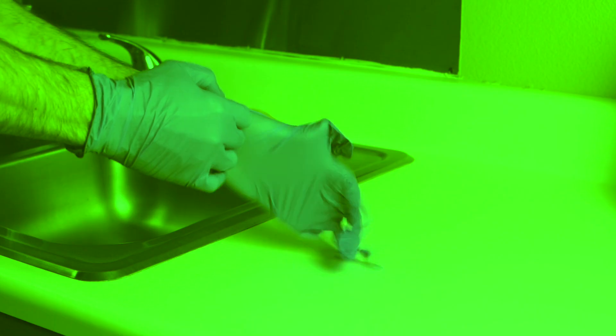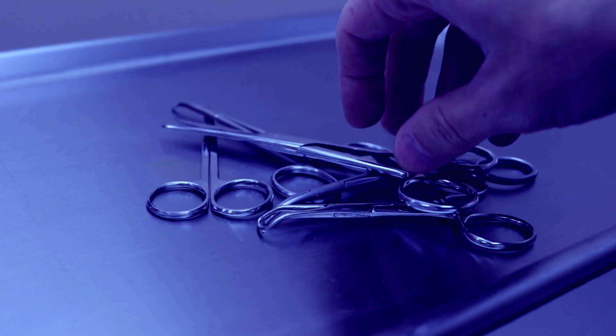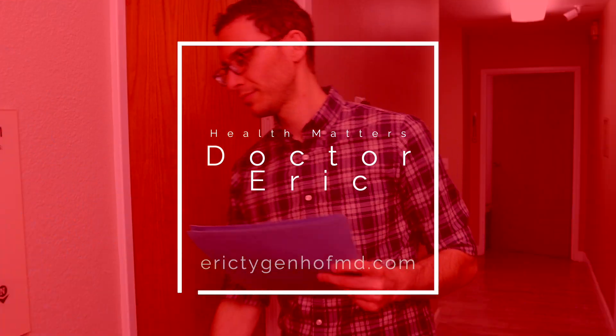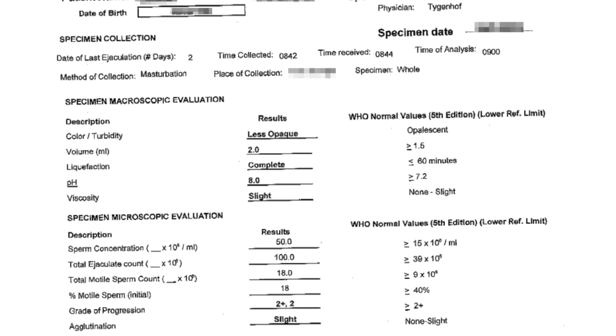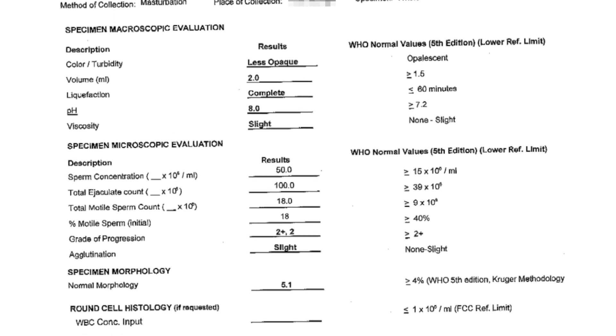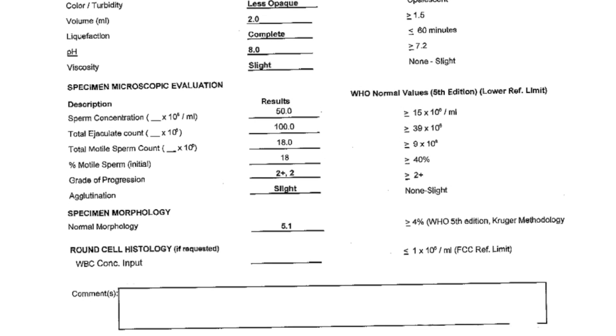Dr. Eric here, talking to you today about a typical semen analysis report and what it means and how to interpret it. This is what a typical semen analysis report looks like. If you provided a good specimen and had the same findings on two separate specimens, then these results should be accurate. The first thing to understand about sperm and semen is that they're not the same thing.